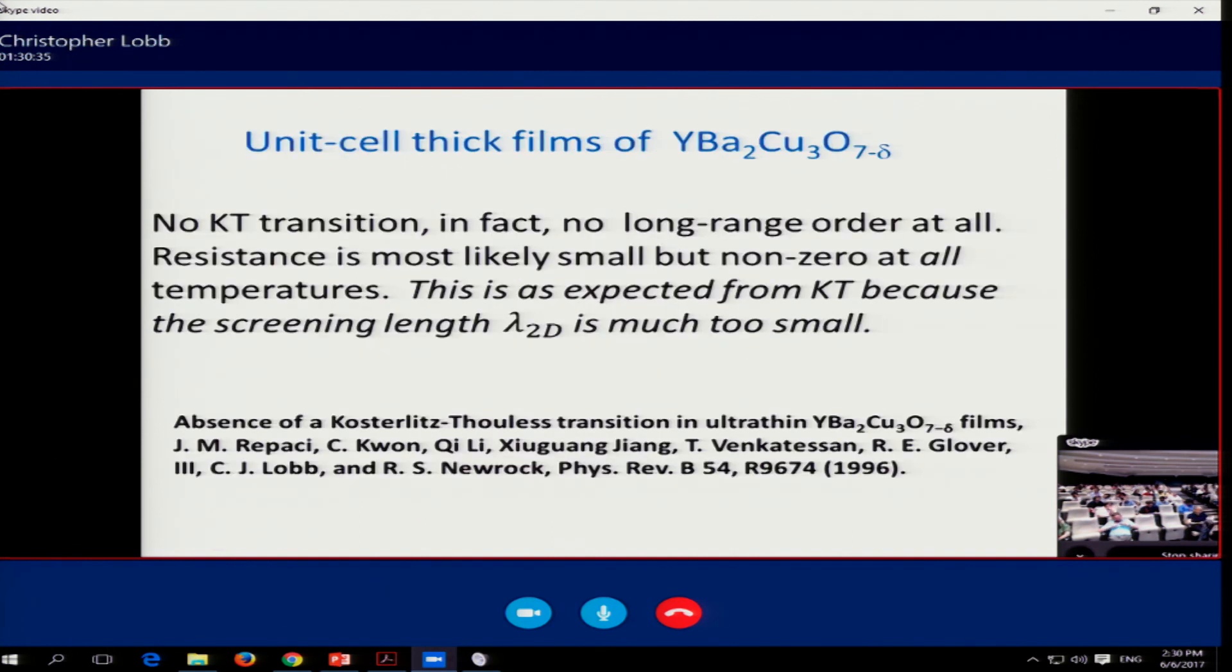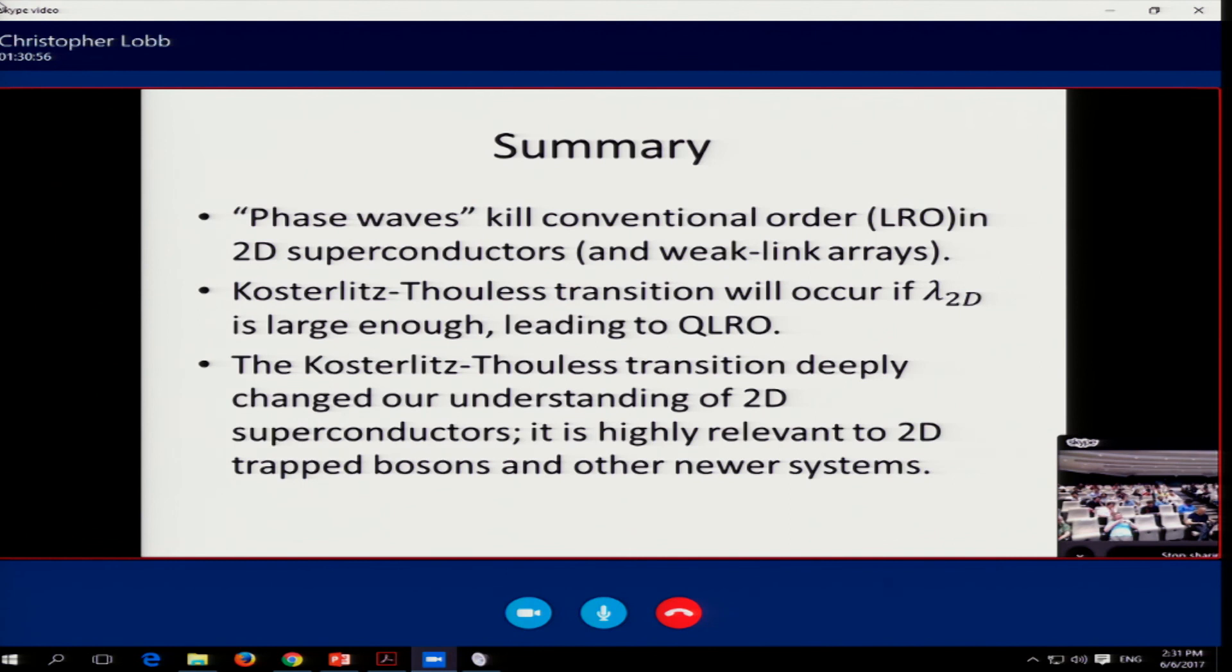What this is, is a kind of broad crossover from ohmic behavior to a fluctuation dominated regime where the resistivity becomes very, very small, but never strictly goes to zero. So in these unit cell thick films of YBCO, to say it again, there is no KT transition. There's no long range order at all. This is what we expect. The resistance is small but non-zero at all points where I can measure it. And here's the paper where we reported this. Well, I can see that I've used up my time. So I'm gonna just put the summary up here and ask if people have any questions that they'd like to ask. And I'm very grateful that you were willing to tolerate a long distance talk. Thank you.